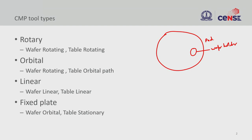You want the pad and wafer to be in constant motion, and the motion can be of different kinds, because you have two elements and you can make both of them rotate or just one of them rotate. Based on this, there are different tool configurations. Here I listed four possible configurations, but there could be many based on application. The first is rotary, where your pad is rotating and also your wafer is rotating — both elements rotating about their central axis.